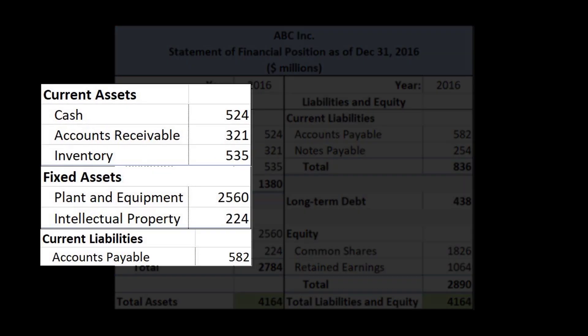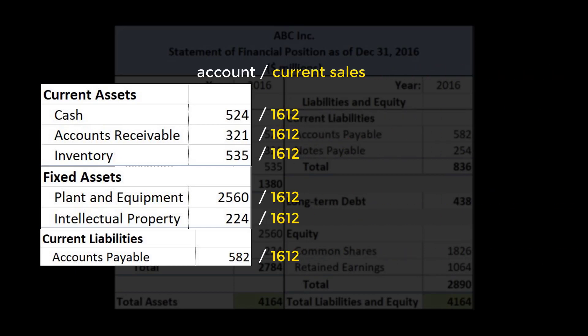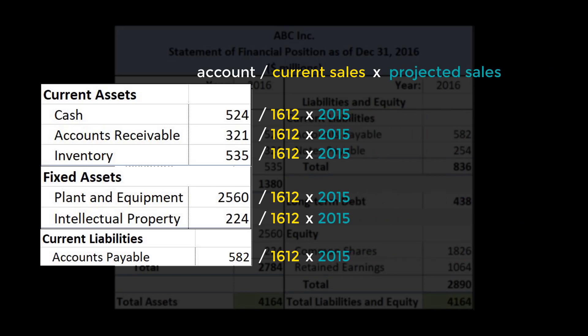Let's calculate how much they change by. Our first step is to restate these accounts as percentages of sales, so we divide each by the current sales figure, 1,612. Our second step is to multiply each of these percentage amounts by the projected sales figure, 2,015, to get the new amount each of these accounts will increase to in proportion with the increase in sales.